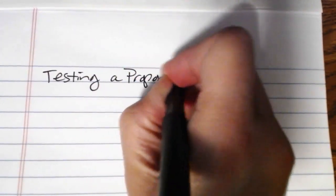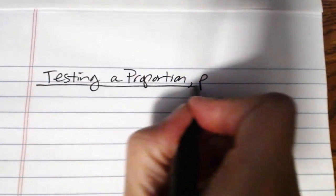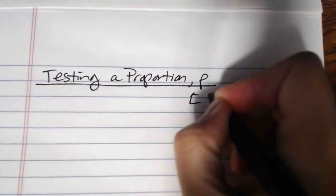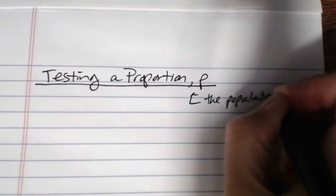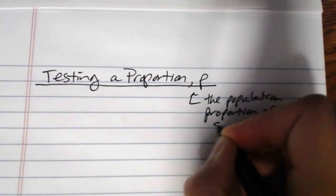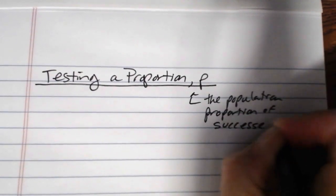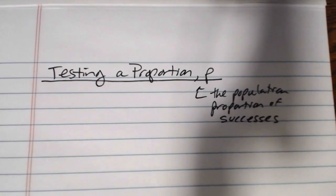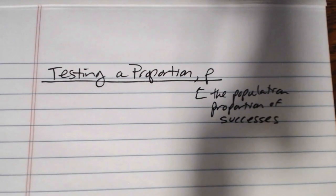In this video we're going to be taking a look at testing a proportion p. This is lowercase p that we're talking about, so this represents the population proportion of successes. When we're doing this kind of hypothesis testing, it's vitally important that you pay attention to the appropriate symbols that you want to use.